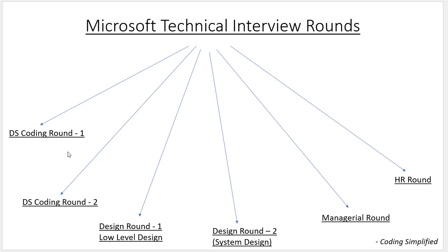If you have more experience — say seven or eight years — the rounds may include a combination of coding plus low level design. For example, for an online gaming question, they might ask you to write code and then design the system, covering different components and classes. With less experience both rounds are pure coding; with more experience the second round can be coding plus low level design.